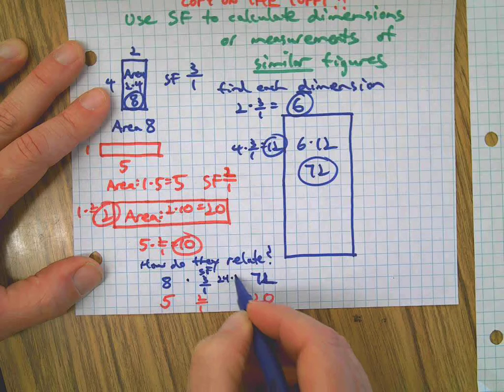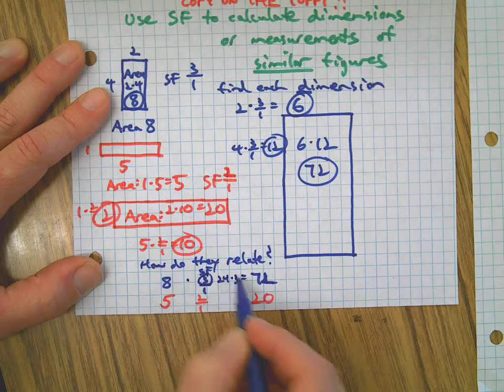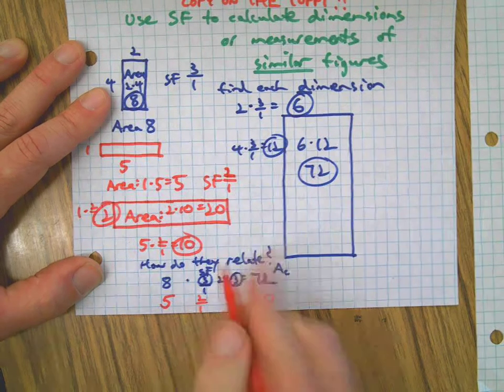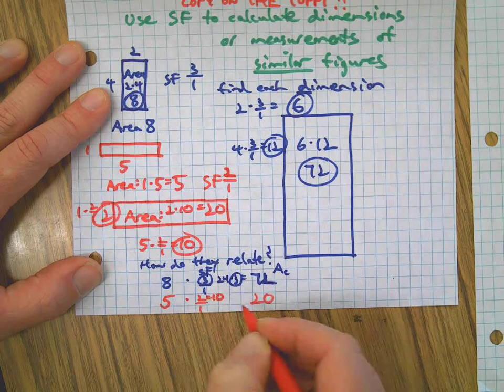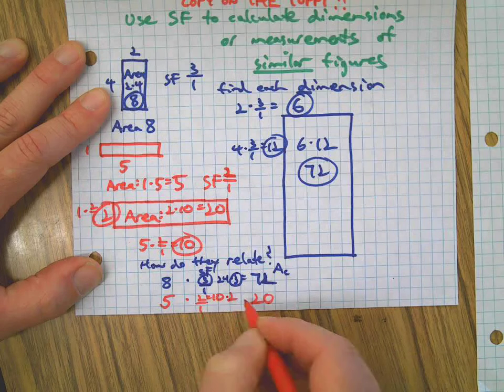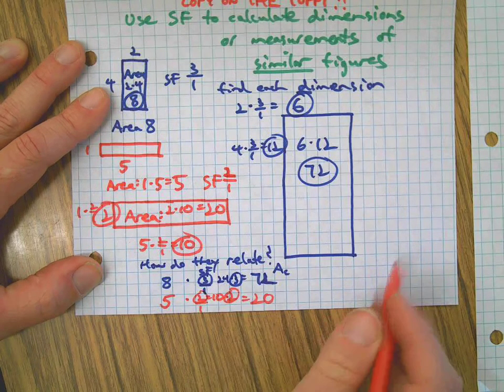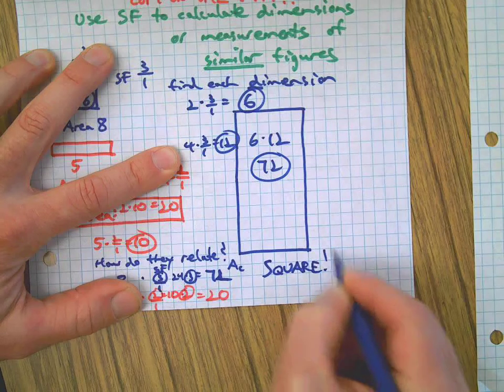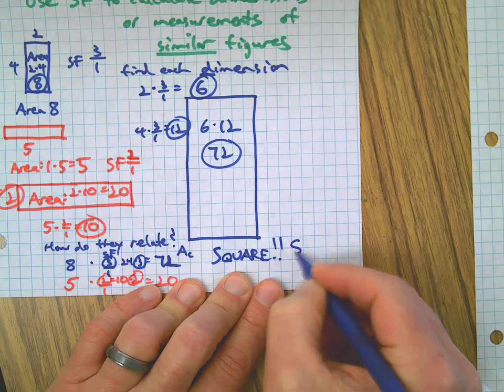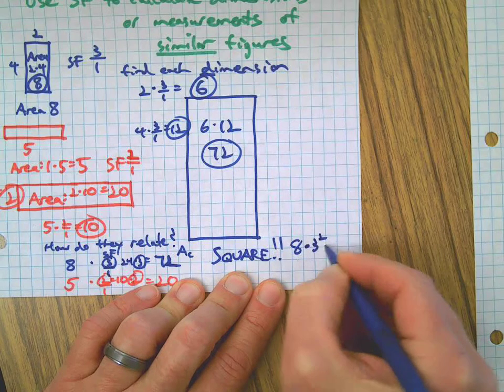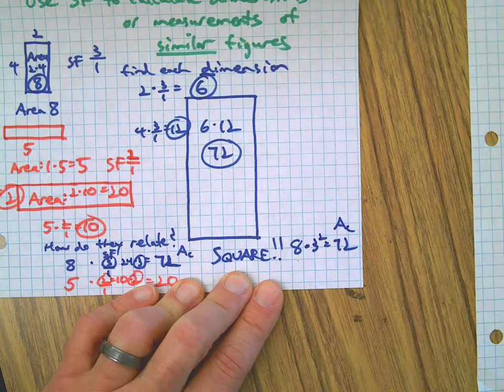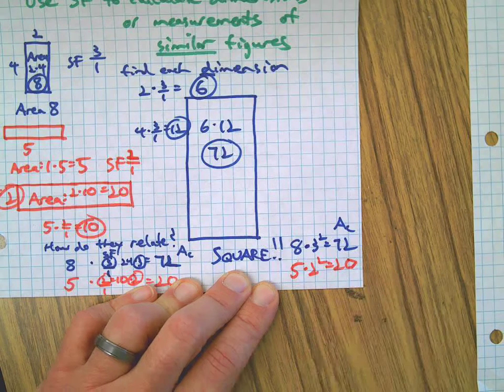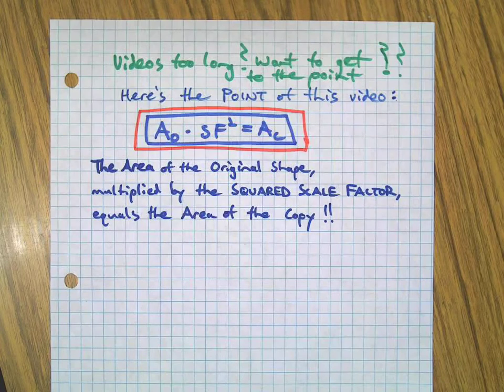So eight times three, because that's how we found the new dimensions, right? Eight times three is 24, but then 24 times three is 72. So we got the scale factor used twice there to get the new area, area of the copy. Does that work down here? Five times two is ten, and then if we multiply that by the scale factor again, that's 20. There it is! It's the square! The square of the scale factor is how this works. So the area of my original times the squared scale factor gave me the new area.